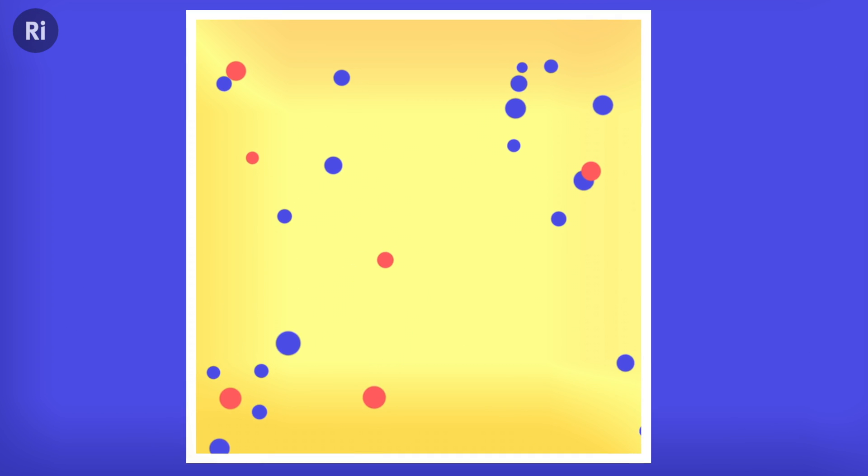In a particle physics collision, when we take two beams, collide them together, everything flies out, mess happens and we've created all these new particles.